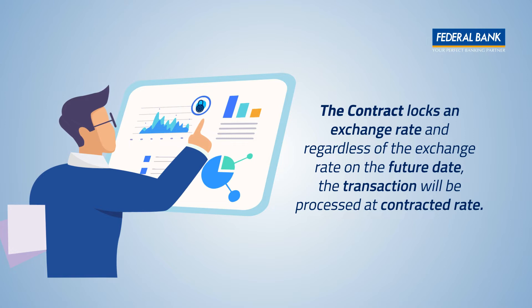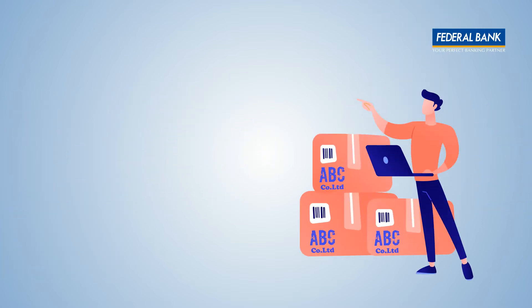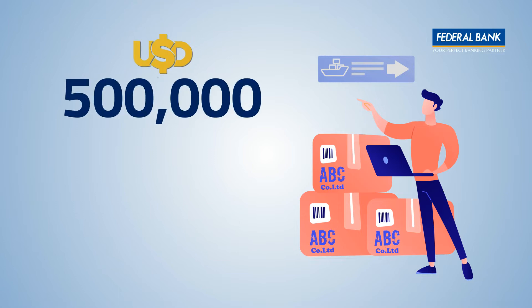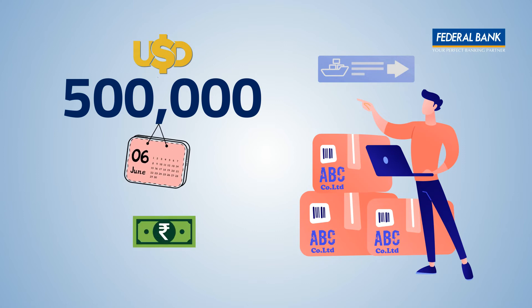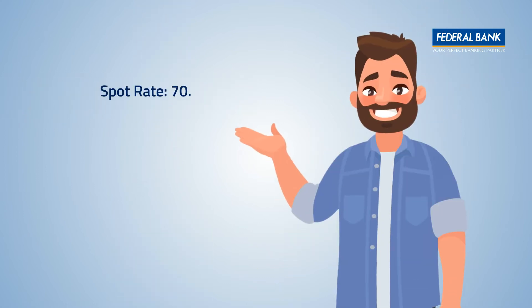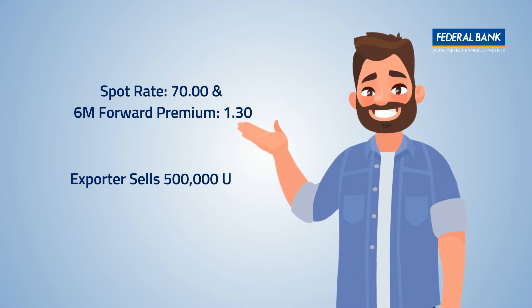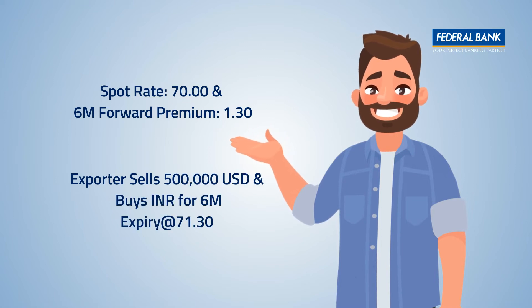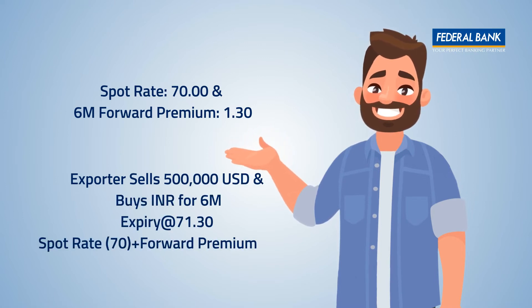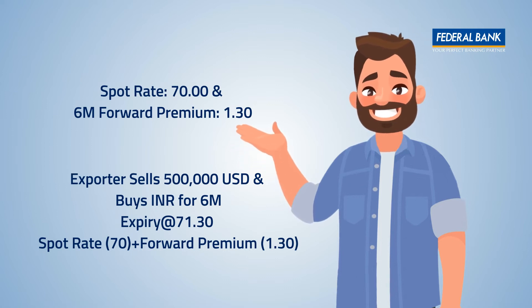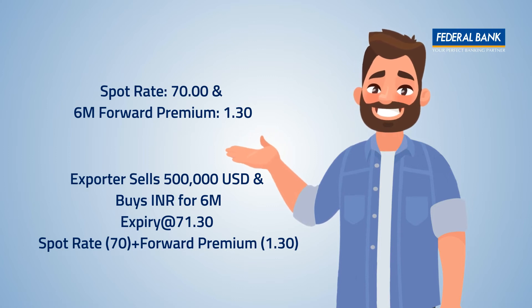For example, ABC Company Limited, an exporter, is expecting USD 500,000 after six months and wants to hedge this receivable for INR conversion. Spot rate: Rupee 70, with a six-month forward premium at the rate of 1.30. The exporter sells USD 500,000 and buys INR, with expiry at the rate of 71.30 — that is, spot rate 70 plus forward premium 1.30.